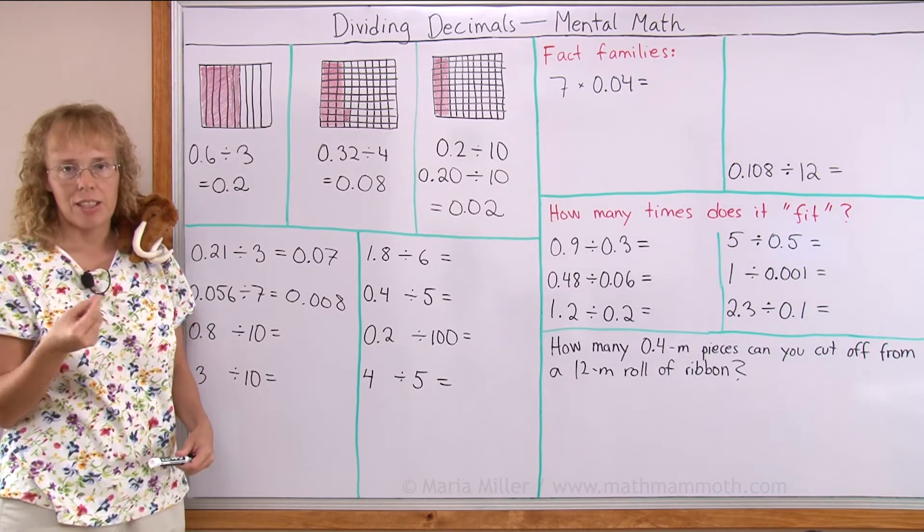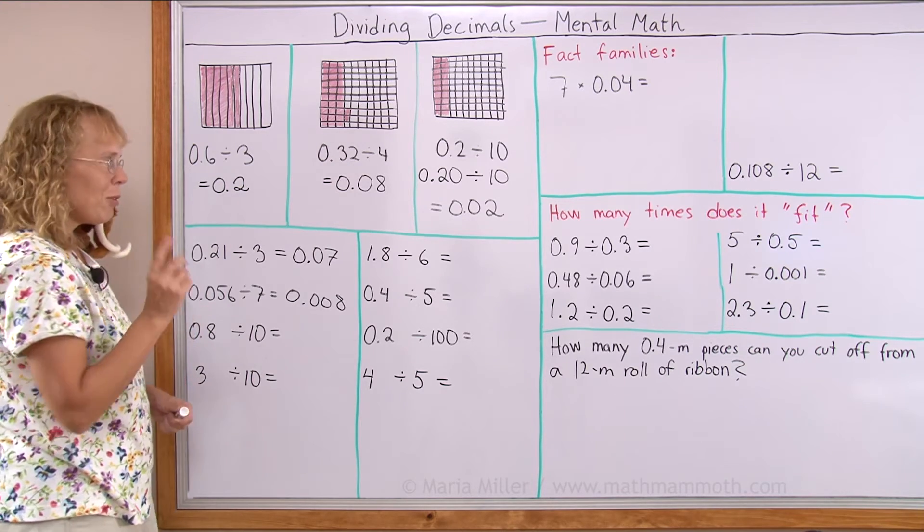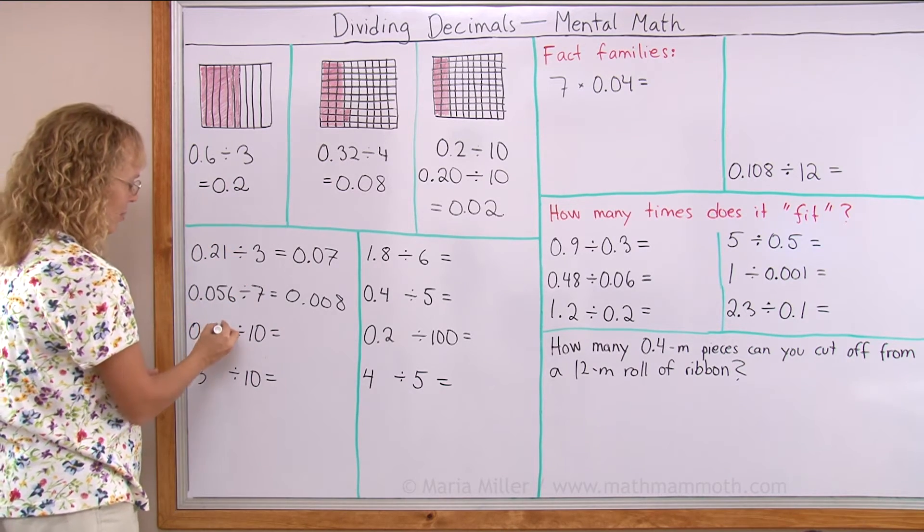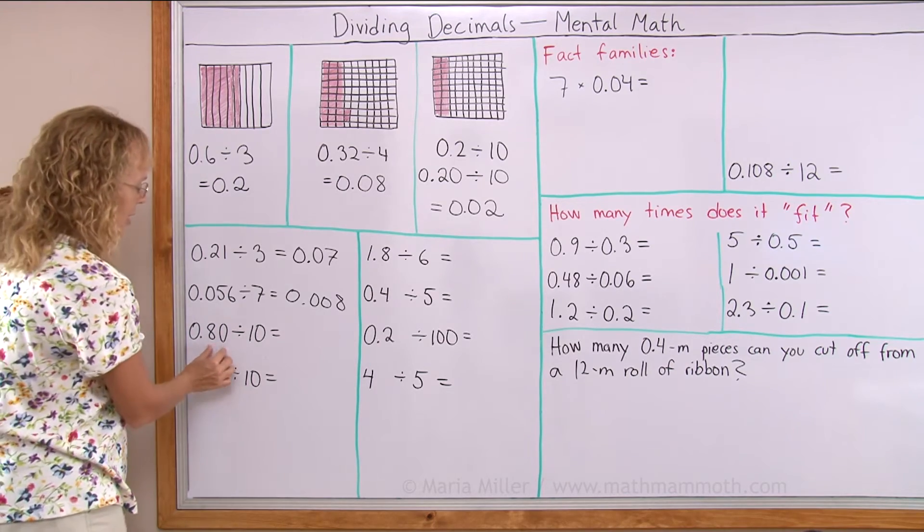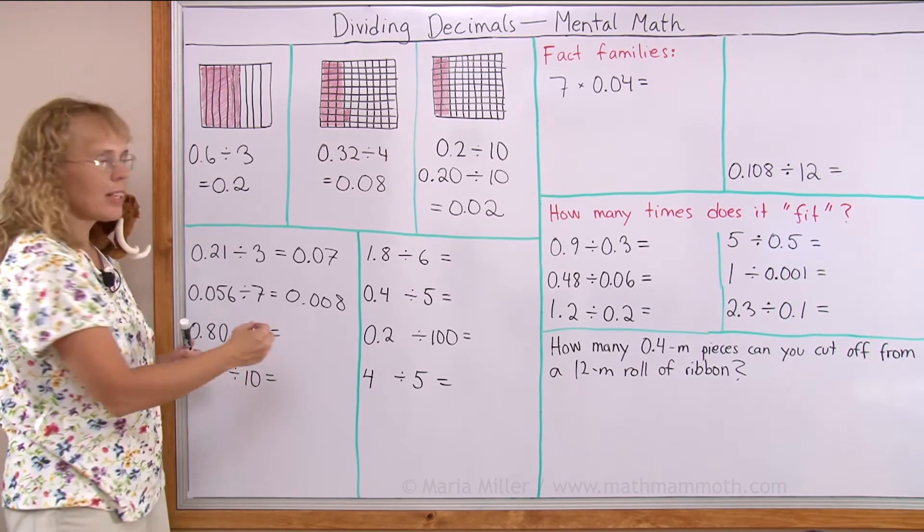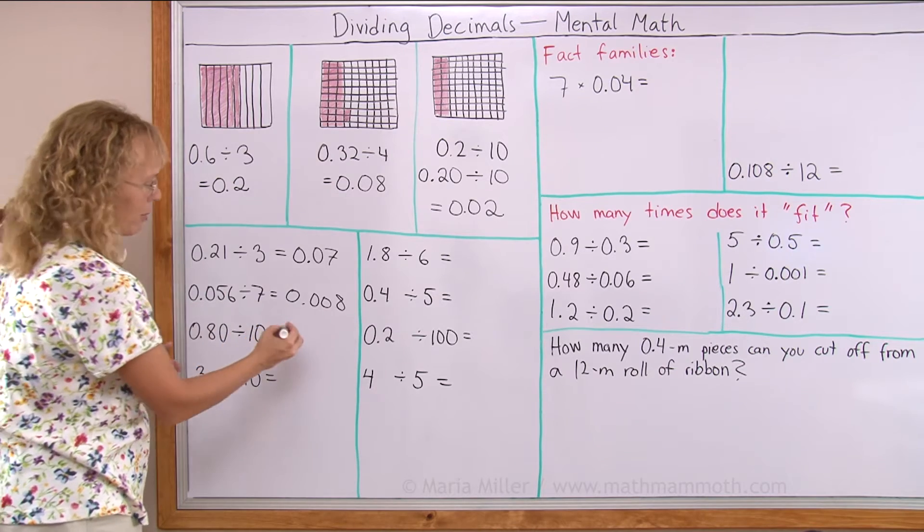Now here, eight tenths divided by ten. I will use the trick of tagging a decimal zero here, so it becomes eighty hundredths. And then eighty divided by ten is eight, and they will be hundredths.